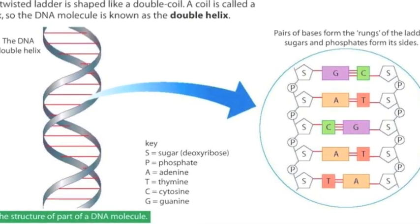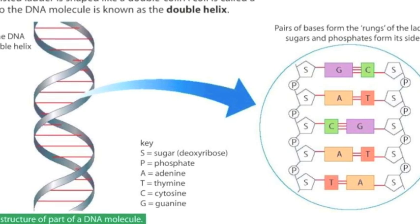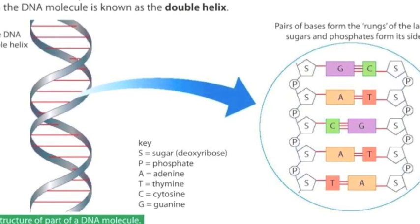The twisted ladder is shaped like a double coil. A coil is called a helix, so the DNA molecule is known as the double helix.